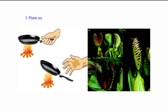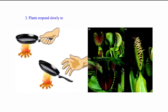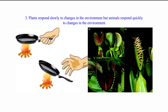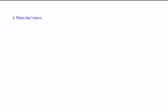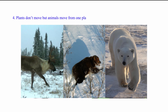Three: plants respond slowly to changes in the environment, but animals respond quickly to changes in the environment. Four: plants don't move, but animals move from one place to another in search of food, shelter, and mates.